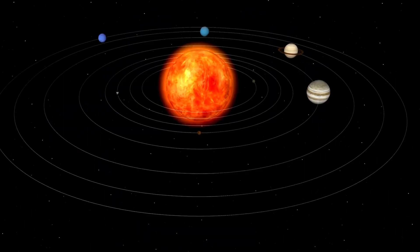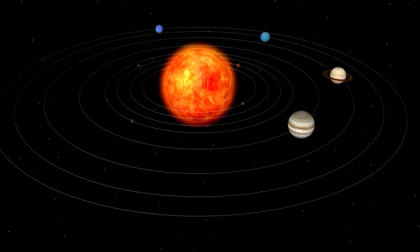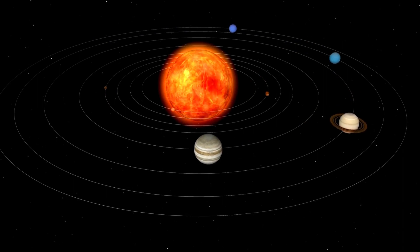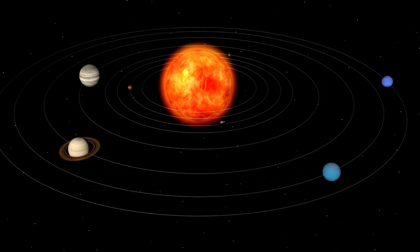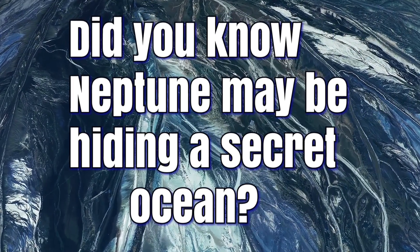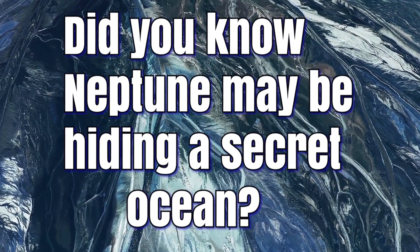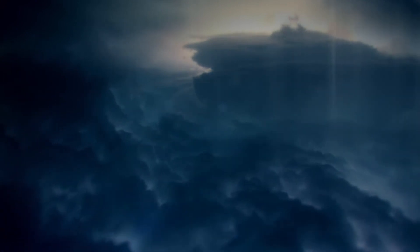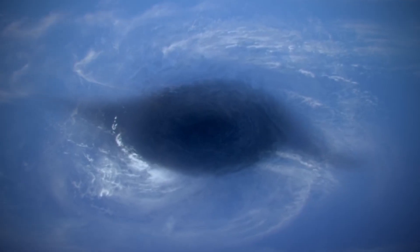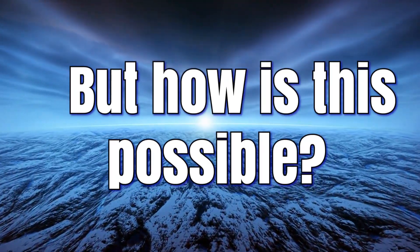Along with Uranus, Neptune is thought to have originated much closer to the Sun before relocating to the outer reaches of the solar system roughly 4 billion years ago. Did you know Neptune may be hiding a secret ocean? That's right. Scientists have discovered that the planet's cold clouds may cover a scorching hot body of water underneath. But how is this possible? Well, the answer lies in the planet's high pressure, which keeps the ocean trapped and prevents it from boiling away.